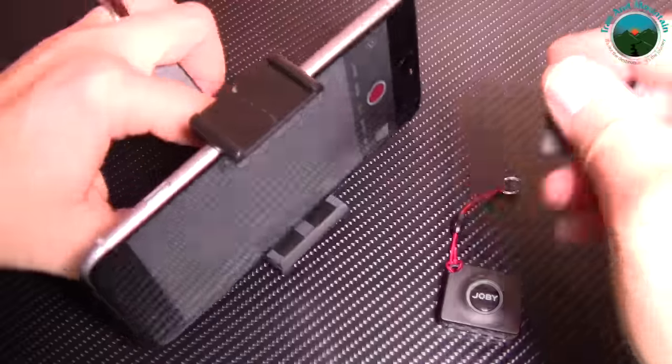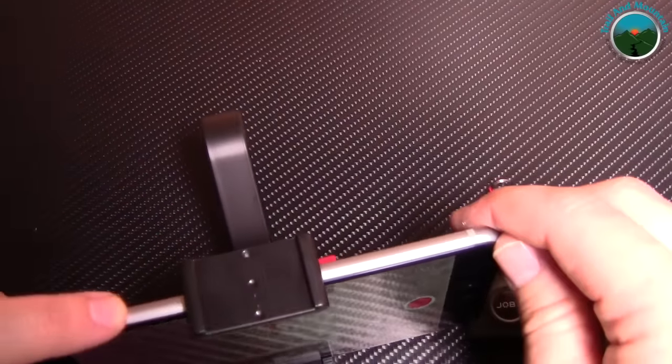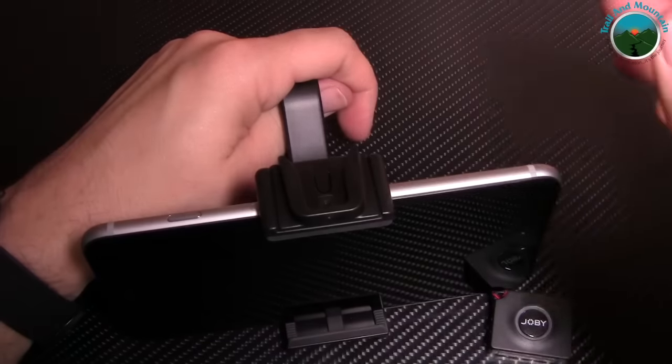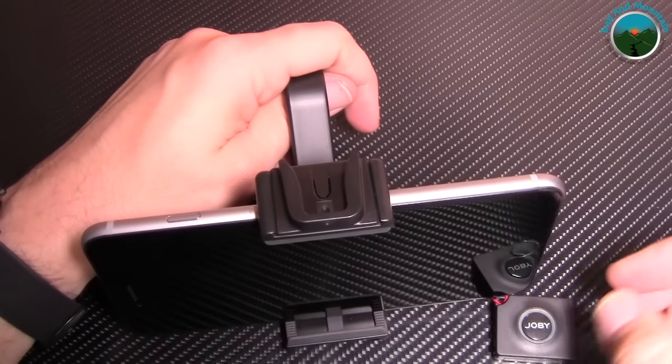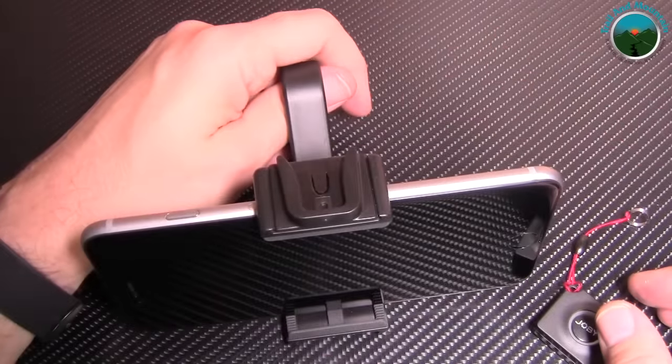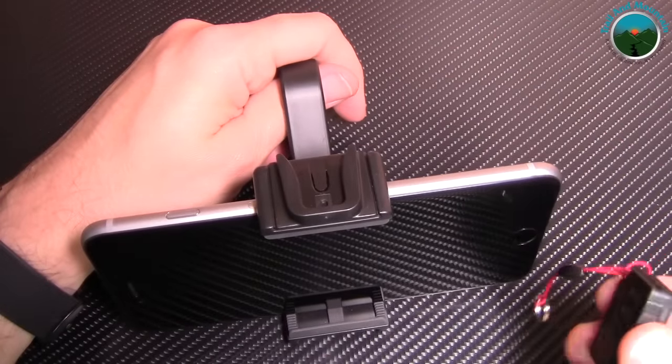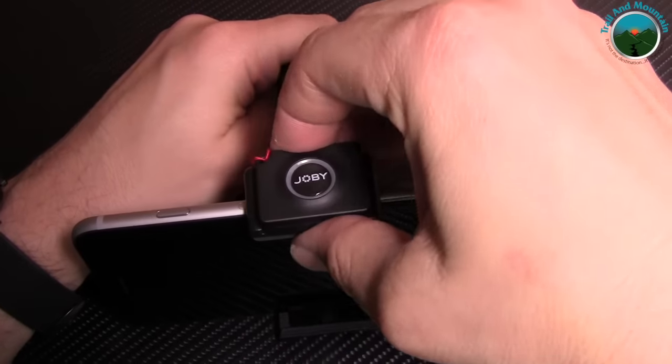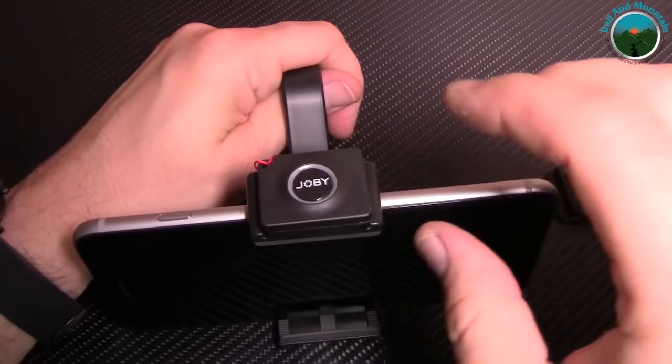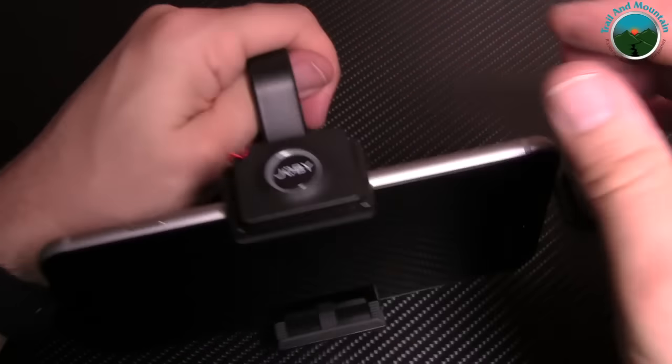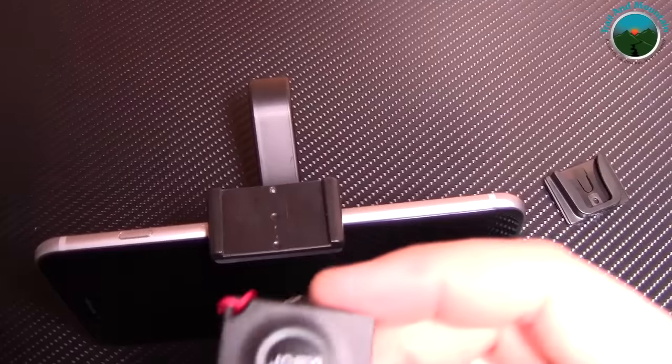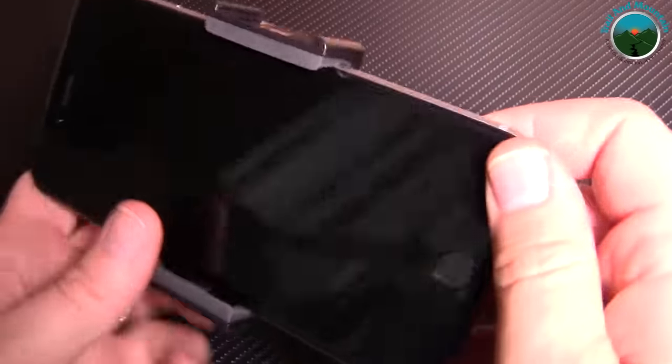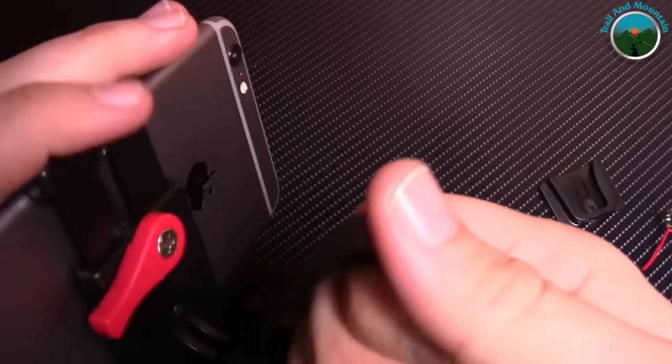On the top here there's also this little mount, you can actually have a cold shoe so you can mount a light or an external mic right there. That's pretty rad. Not to mention if you don't want that there, you can just take this off, put the Joby little Bluetooth deal right there and it stays in place, it doesn't move, it doesn't budge. Keep in mind this is Bluetooth, so this is going to work 30 feet away from the phone.